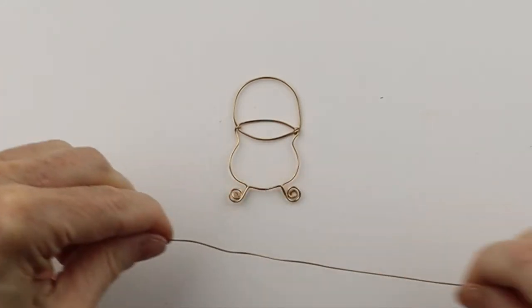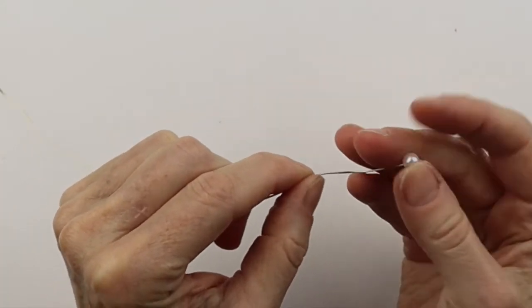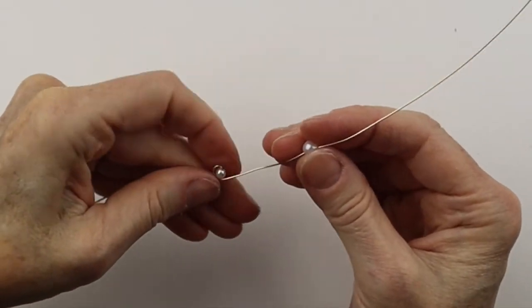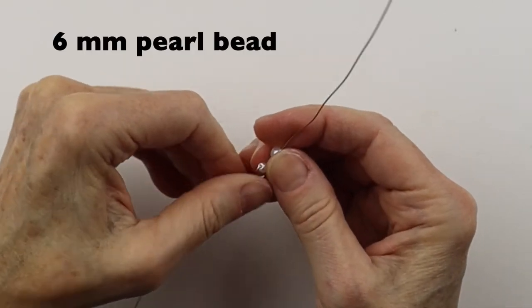Okay, so there's one. We want to vary the size. So there's a four millimeter. We'll do a six millimeter.